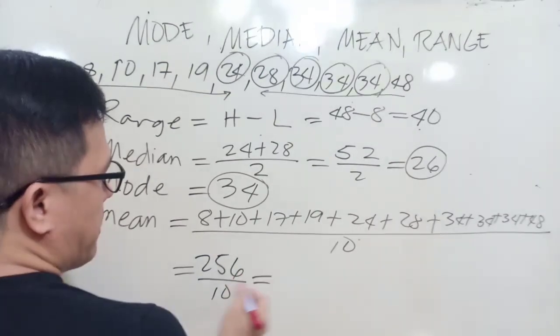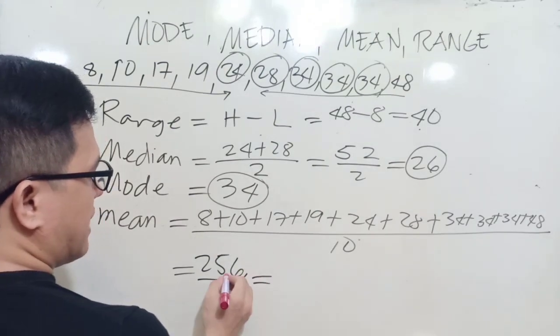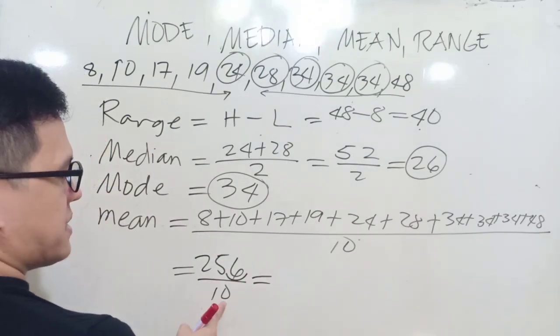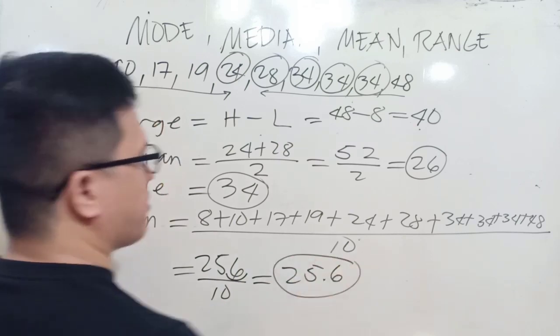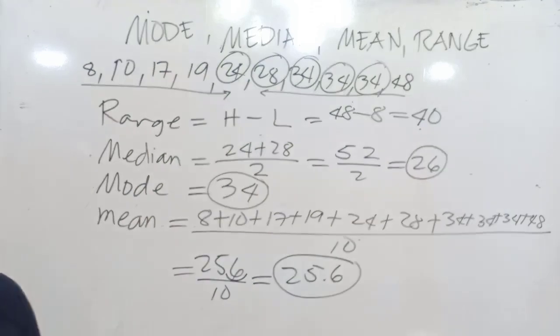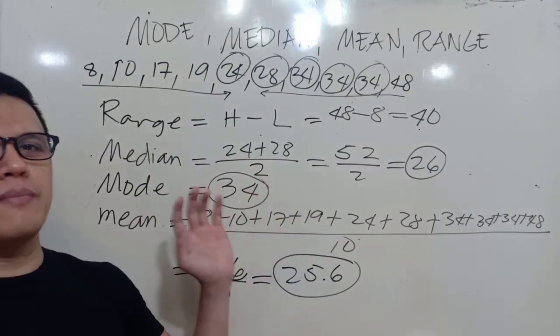Our mean is equal to 256 divided by 10. Let's do one decimal place, so that is 25.6. So this is our mean or the average. That's how to get the range, mode, median, and mean.